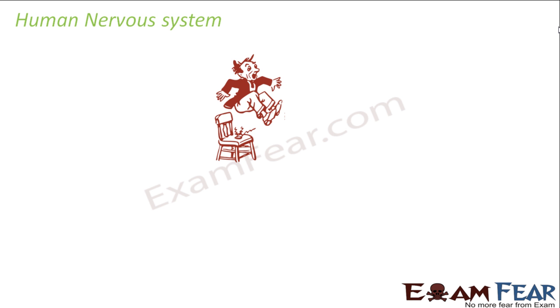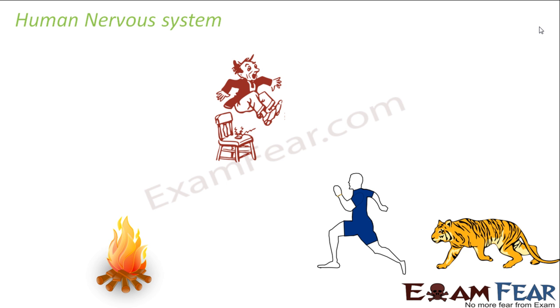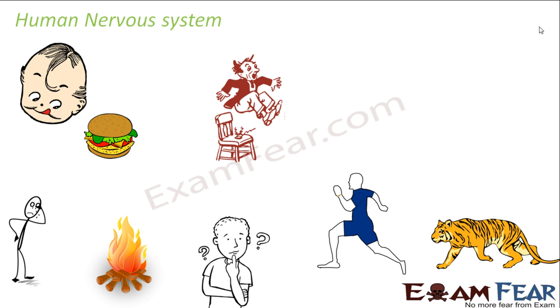The nervous system handles instantaneous and relatively faster responses compared to the endocrine system. For example, when a person gets an electric shock they immediately jump, when someone runs seeing a tiger, when you touch a hot object and immediately remove your hand, when your mouth waters on seeing delicious food, or when you think and write answers during exams — these are all examples of the nervous system at work.